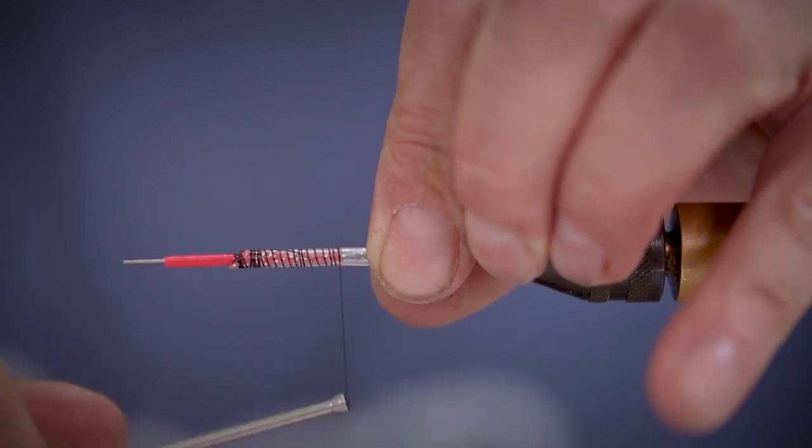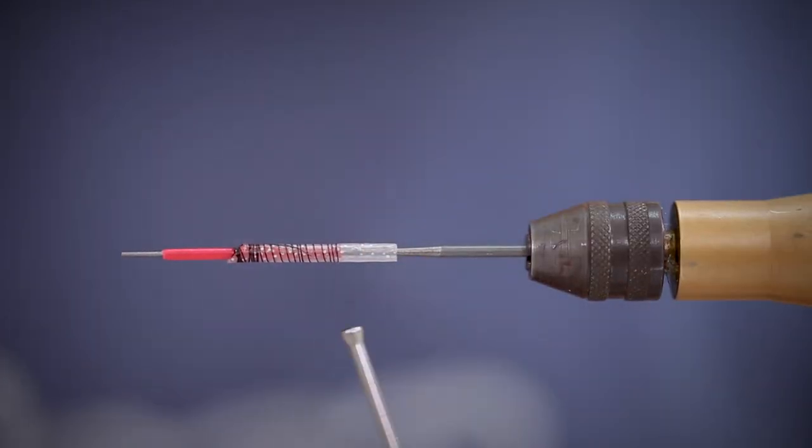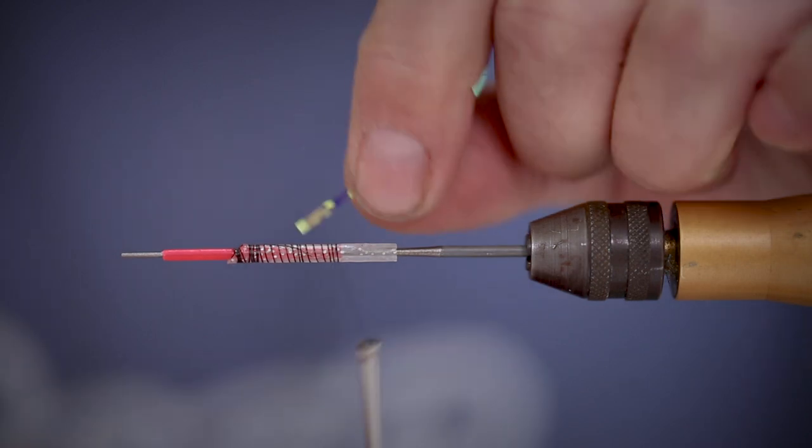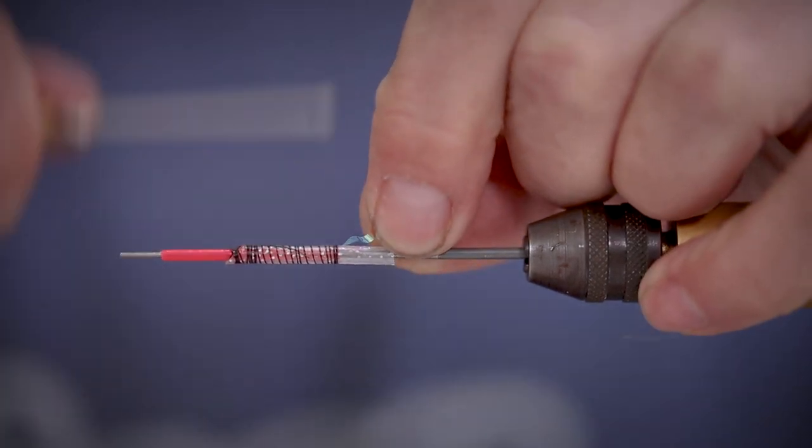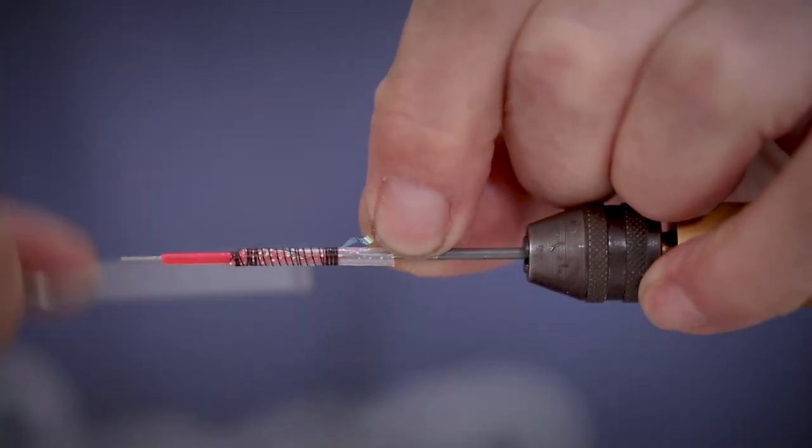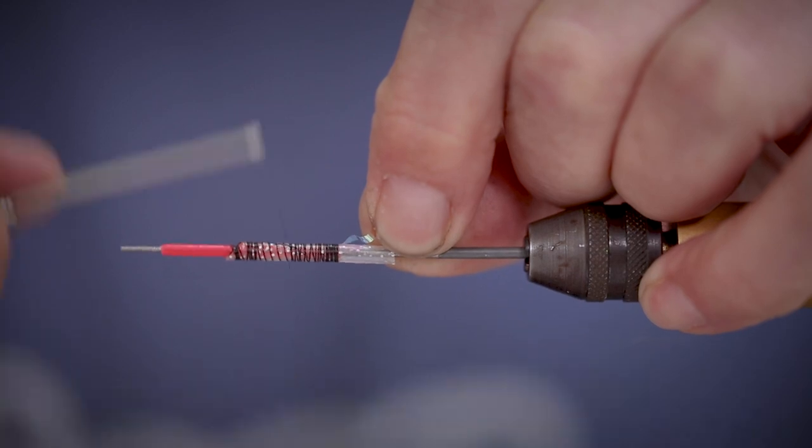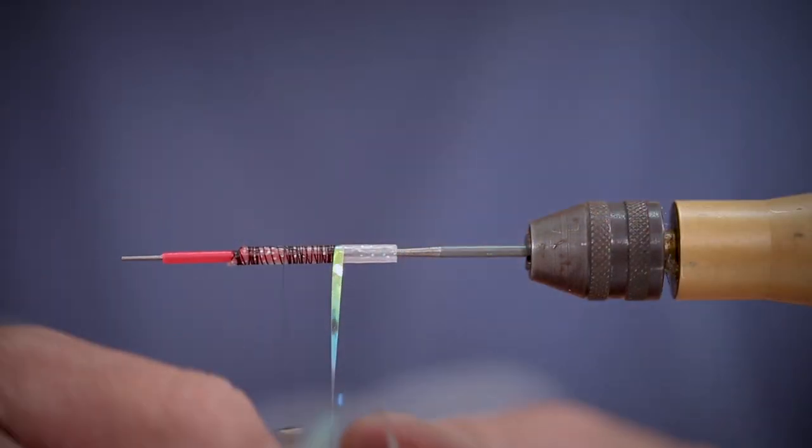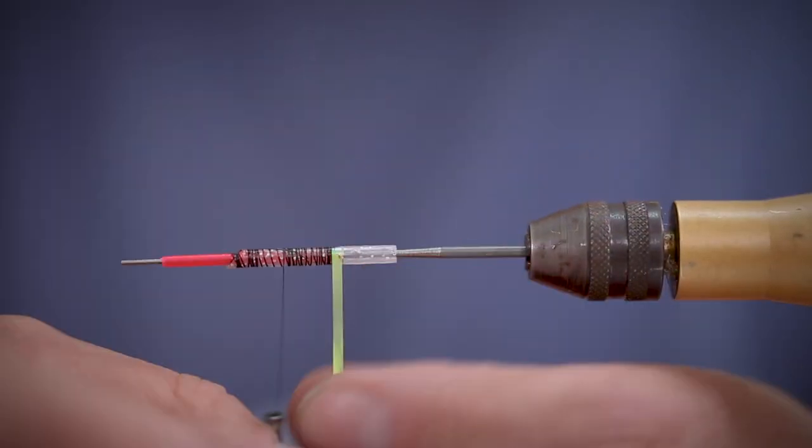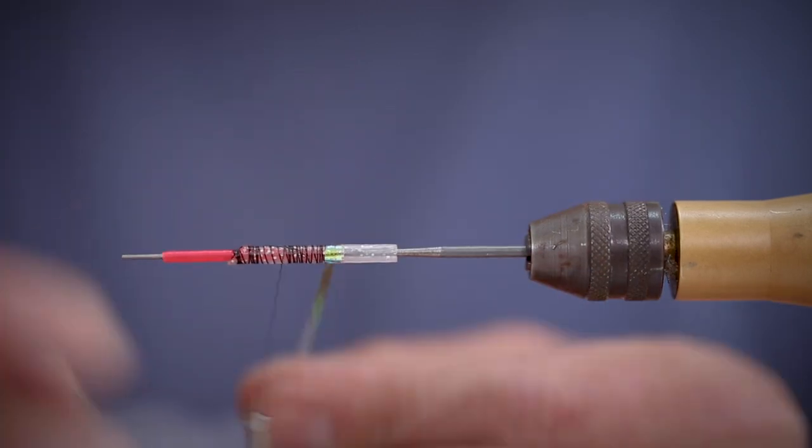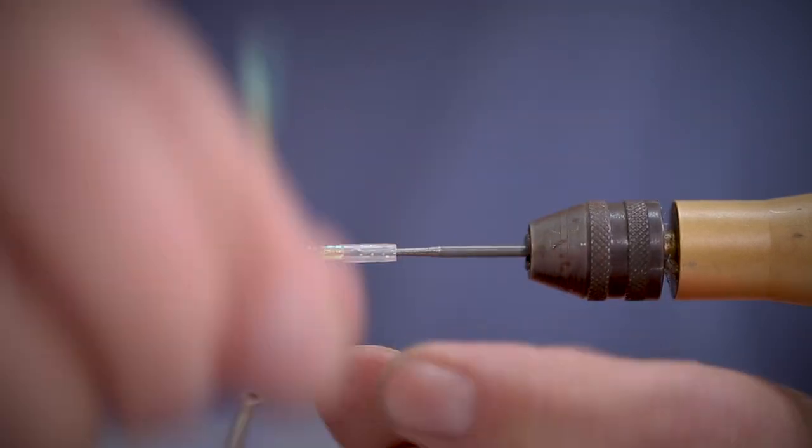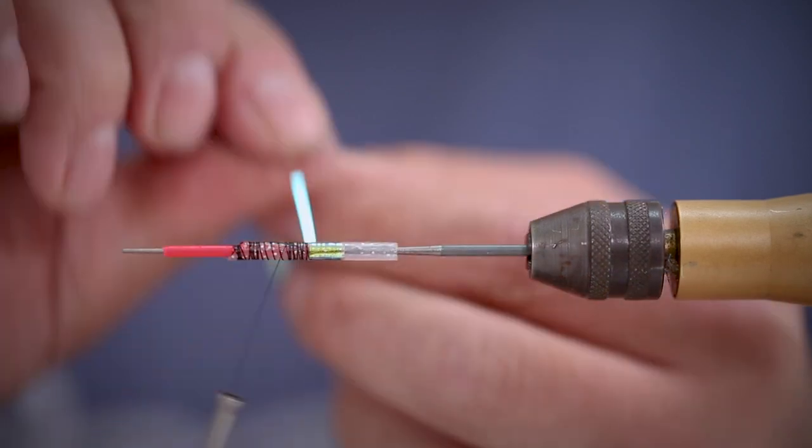We're starting off with a red 1.8mm liner tube and a clear glitter 3mm outer tube. Begin with a mirage tinsel body overlapping with each turn for one third of the body.